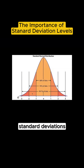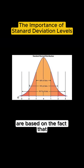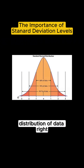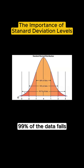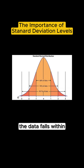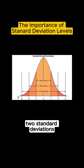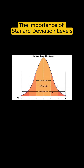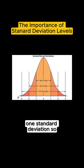Standard deviations are based on the fact that in a normal distribution of data, 99% of the data falls within three standard deviations, 95% of the data falls within two standard deviations, and 68% of the data falls within one standard deviation.